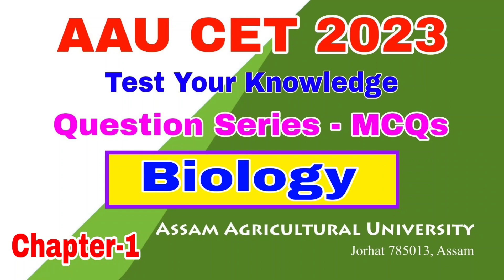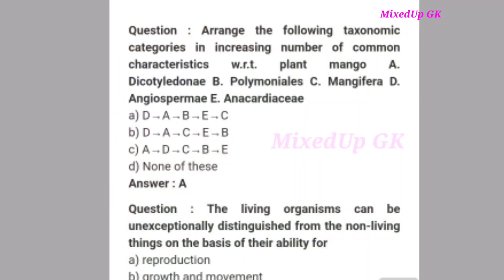Starting Part 2 now. First question: Arrange the following taxonomic categories in increasing number of common characteristics with respect to the plant mango. Options are: A - Dicot, B - Polymoniales, C - Magnoliopsida, D - Angiosperm. The correct series in increasing order is option A: the correct answer is A, D, B, E, C.